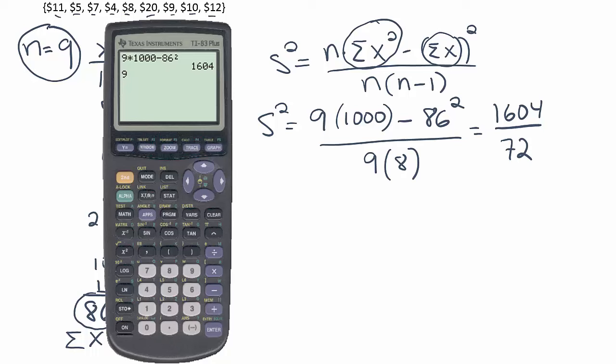So again, if you were going to do it in your calculator, you just do that separately. 9 times 8 is 72. And then you have 1604, right? Divided by 72. And when you're done, you get 22.278. Round it off to three decimal places.